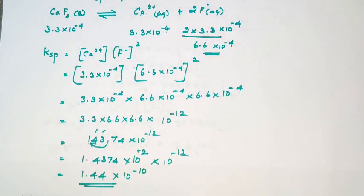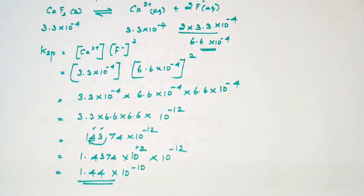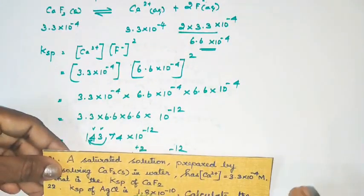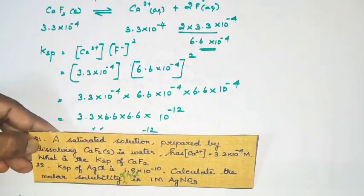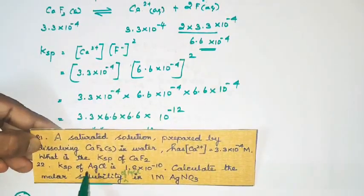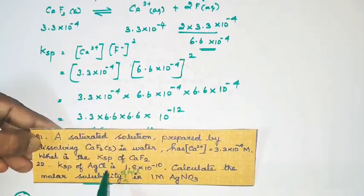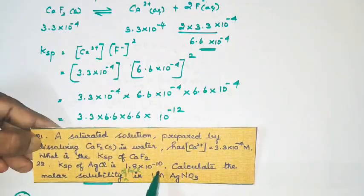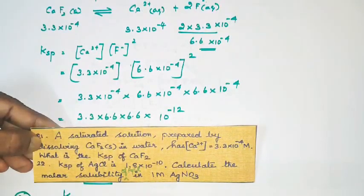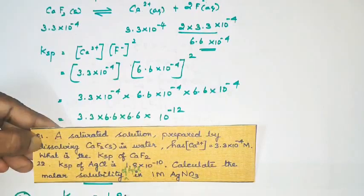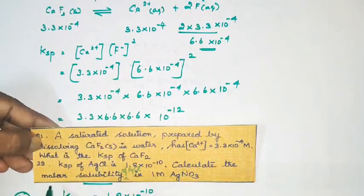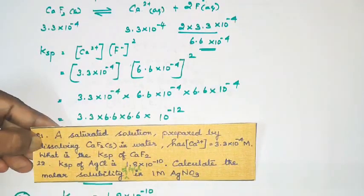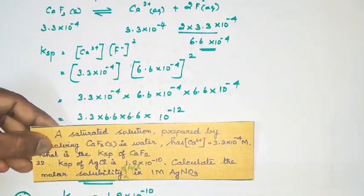Now, twenty-second sum. Question: Ksp of AgCl is 1.8 × 10 power minus 10 — Ksp value is given for AgCl. Calculate the molar solubility of AgCl in 1 M AgNO₃.